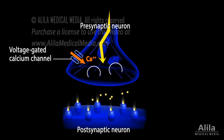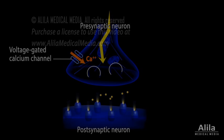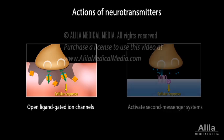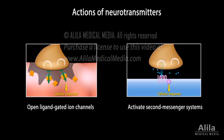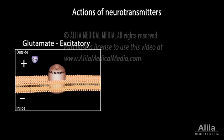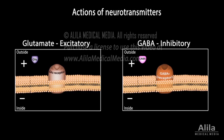Upon binding to their receptors on the postsynaptic cell, some neurotransmitters open ligand-gated ion channels, causing direct changes to the membrane potential of the receiving cell, while others act through second messenger systems to exert their effect. Some neurotransmitters are excitatory, others are inhibitory, and for some, the effect can be either excitatory or inhibitory, depending on the receptor they bind to.